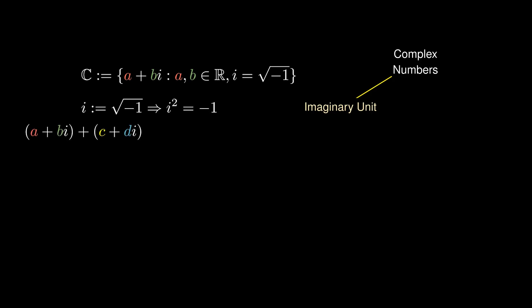When we add two complex numbers a + bi with c + di, we get another complex number of the form (a + c) + (b + d)i.